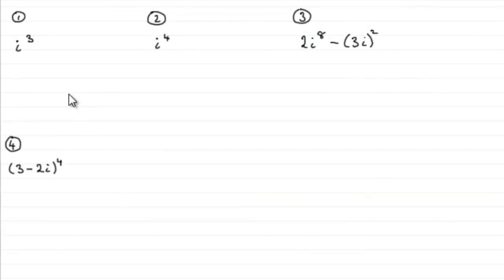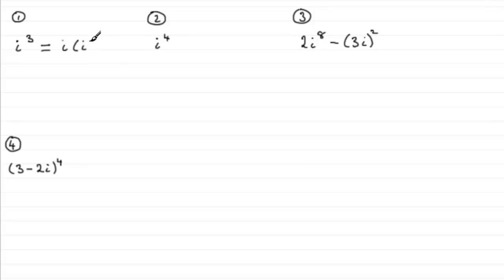Welcome back if you had a go at these — let's see how you got on. Well, first of all, i cubed. How are you going to do that? What you'd need to do is think of this as i multiplied by i squared. We know that i squared is minus 1 — the square root of minus 1 times the square root of minus 1 — that's minus 1. So we end up with minus i.